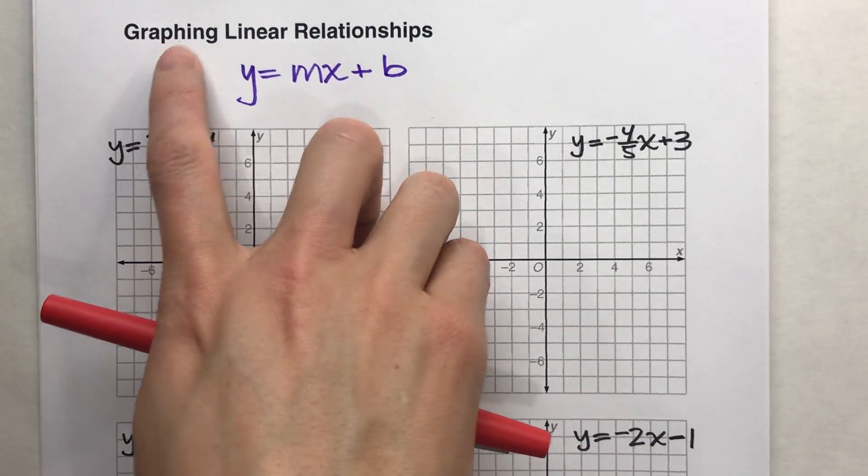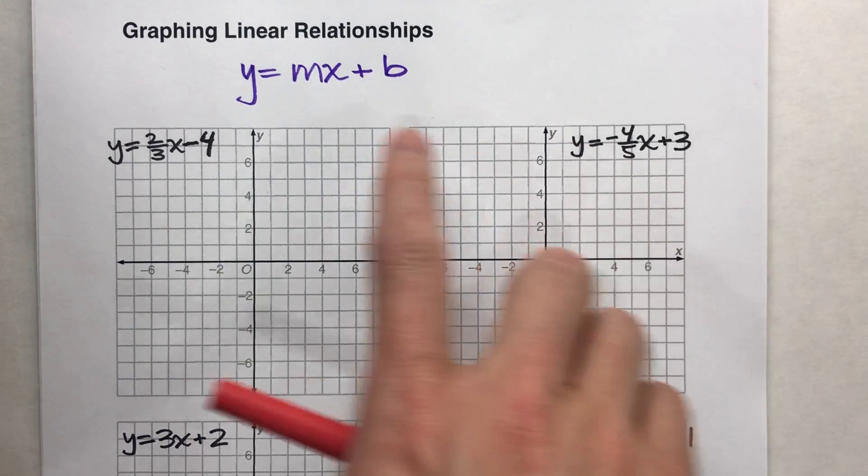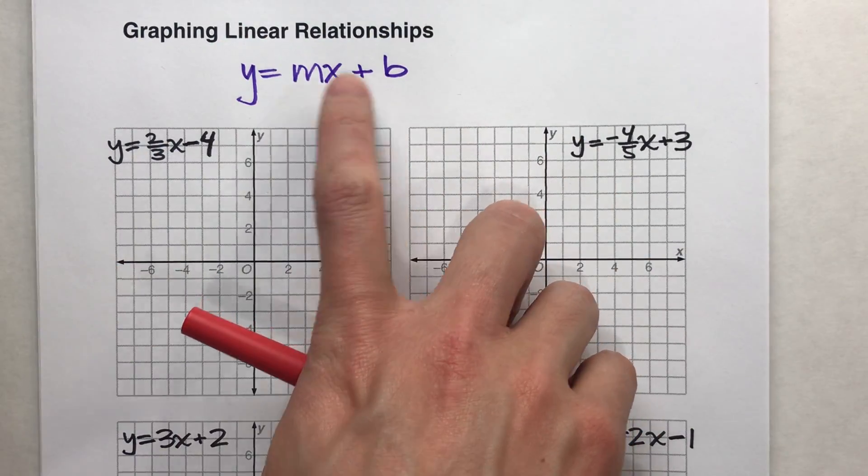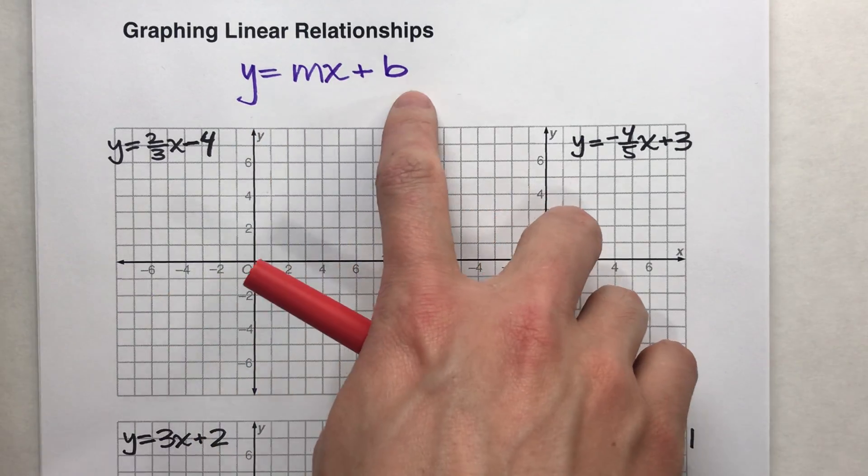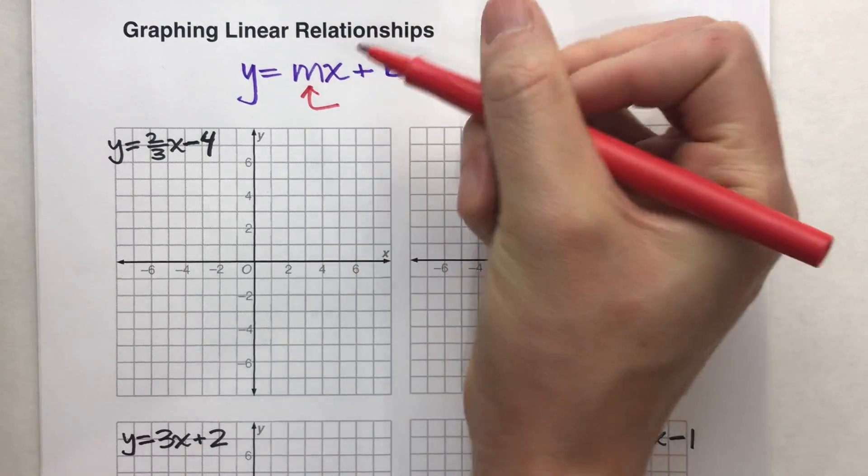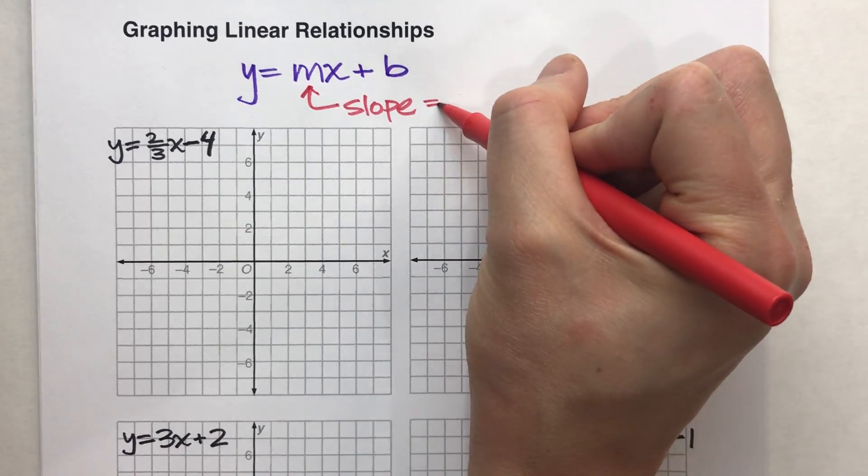So today, I'm going to show you how to graph linear relationships from an equation. Now, the general formula for a linear relationship is y equals mx plus b, where m is just some number, but that number is your slope.